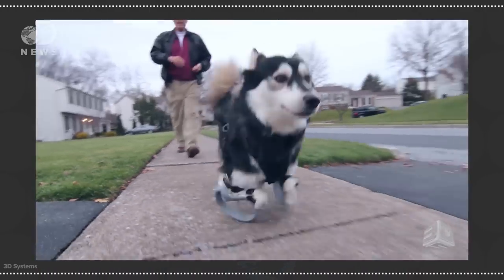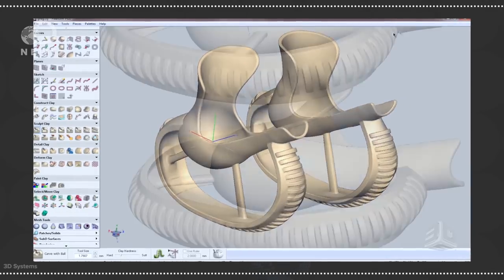3D Systems, a company based out of South Carolina, designed artificial legs for Derby, but unlike a cart system, these prosthetics are designed for running. They look a lot like the blades Paralympic athletes might wear. Now this lucky dog can frolic through the grass with the best of them.